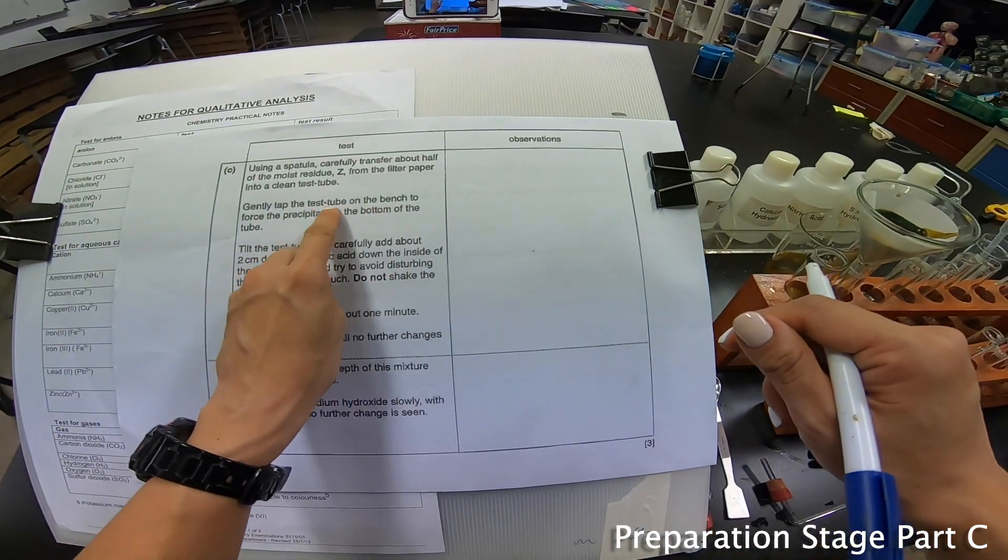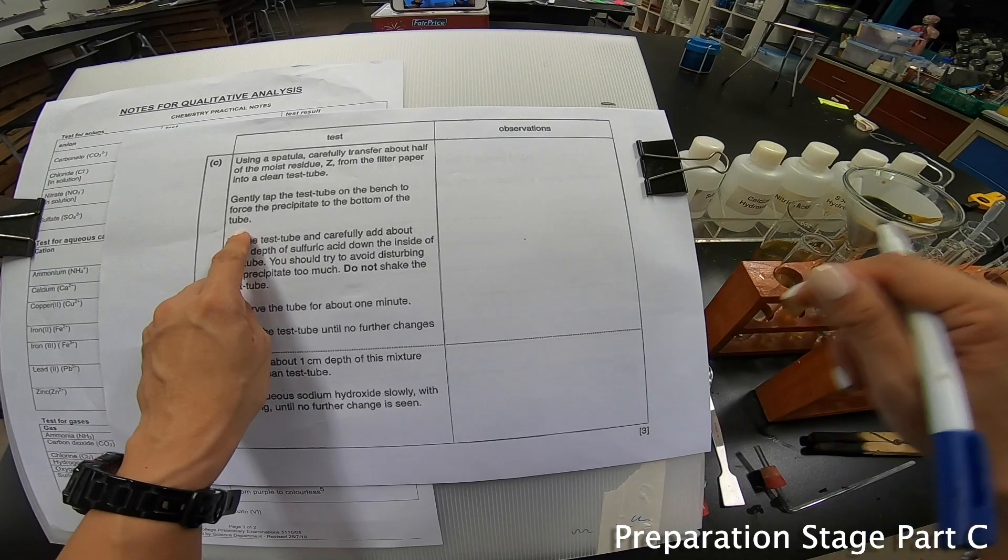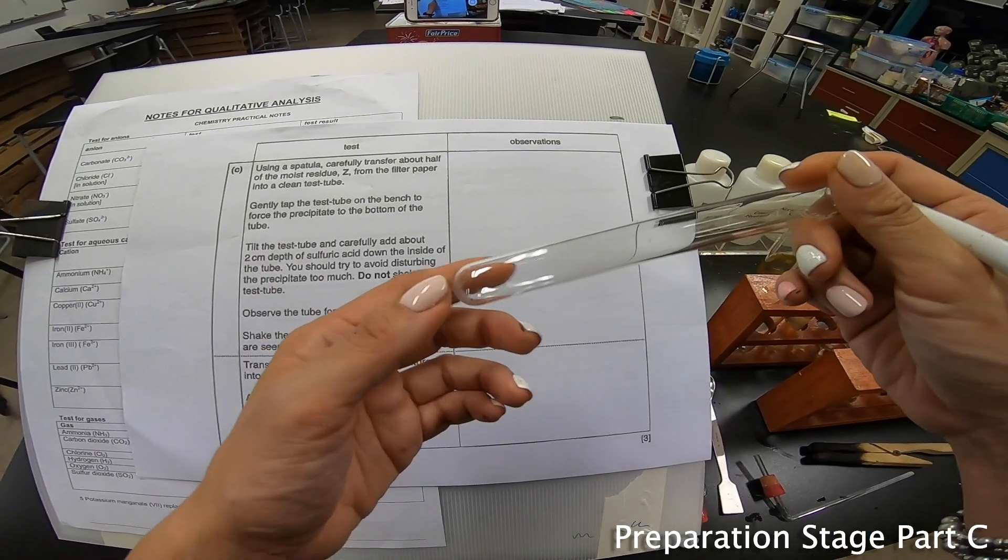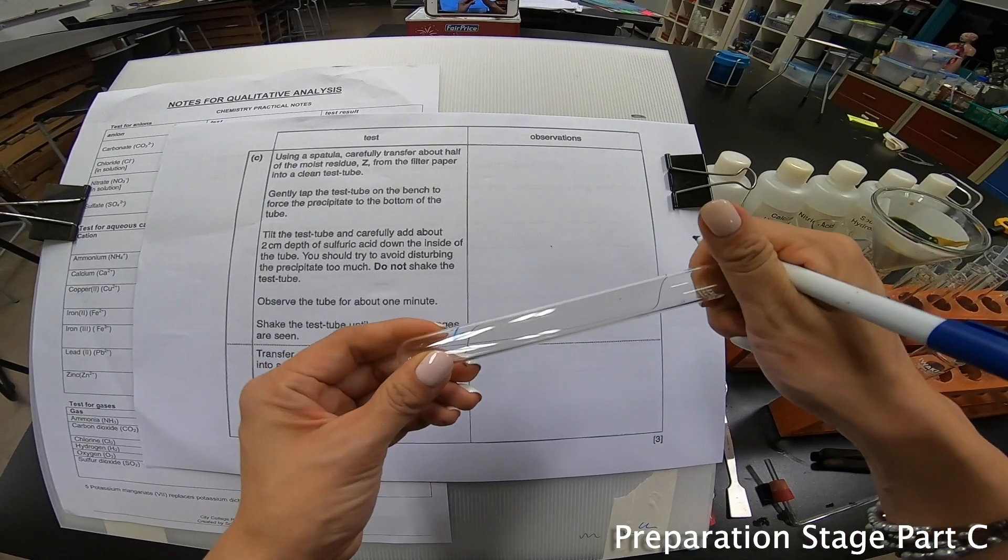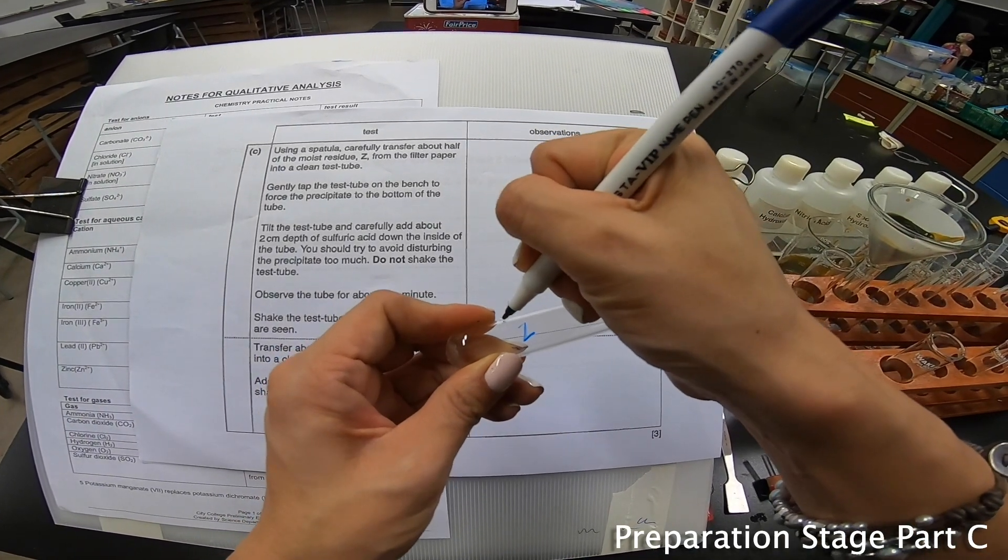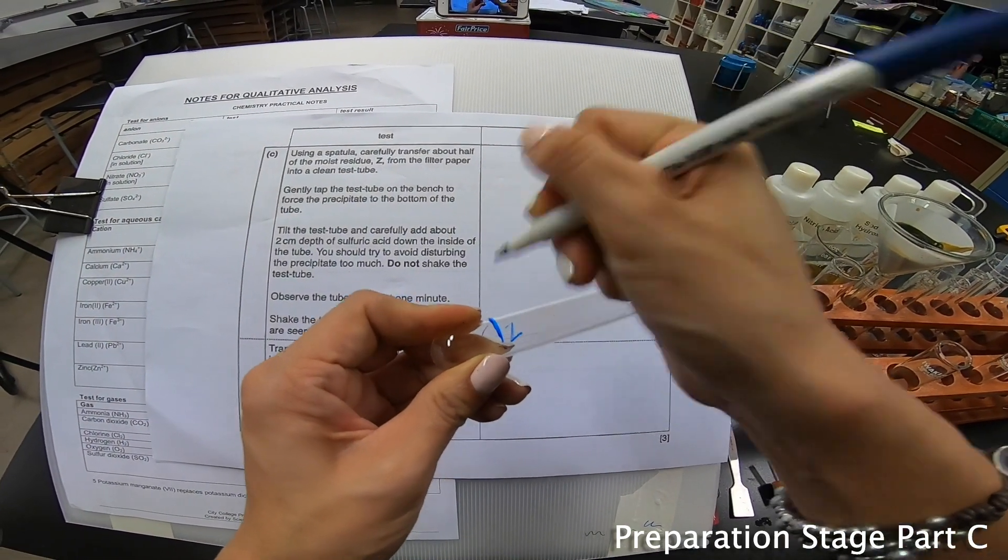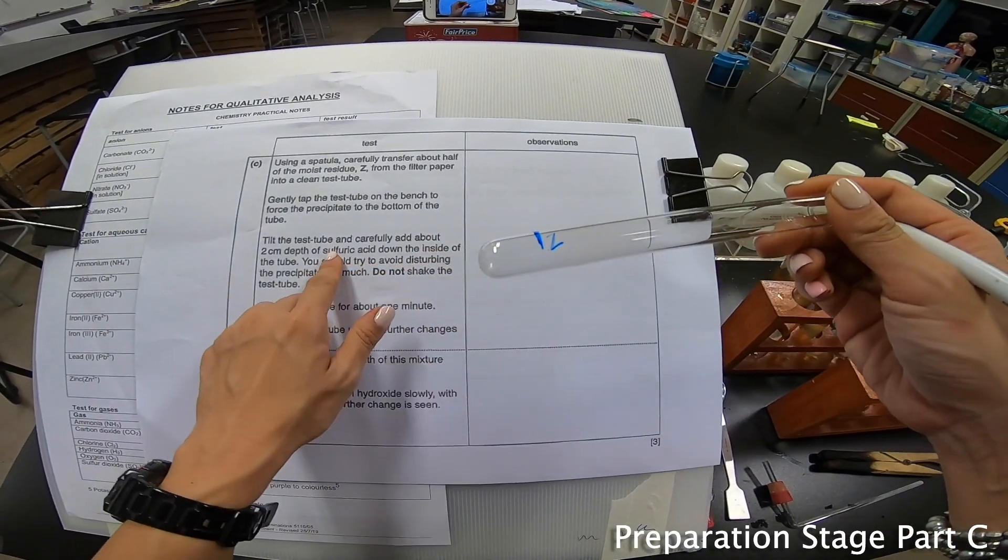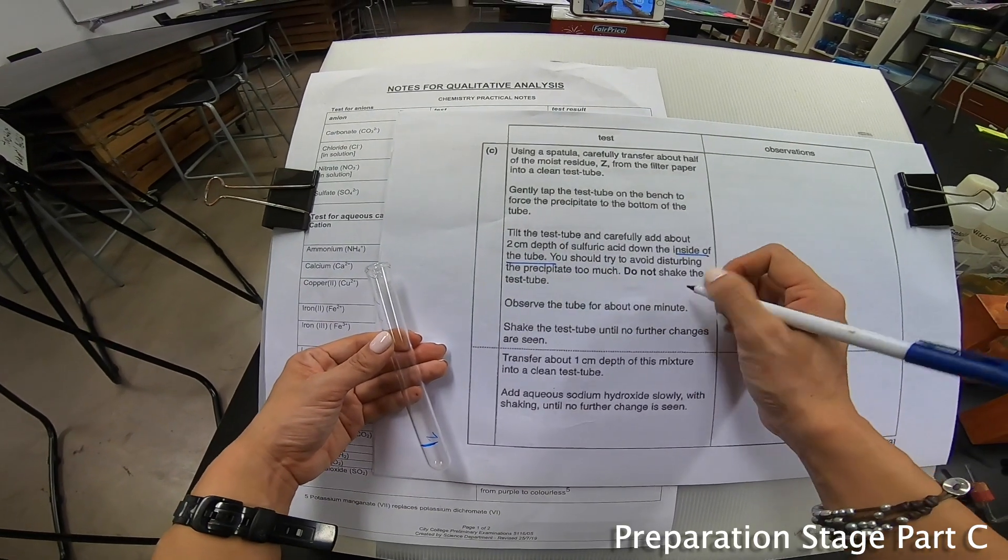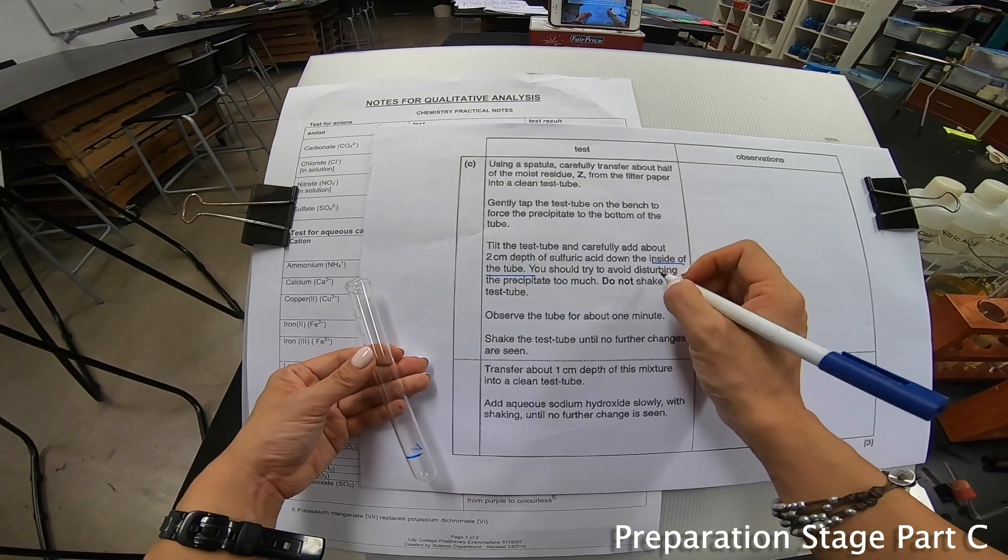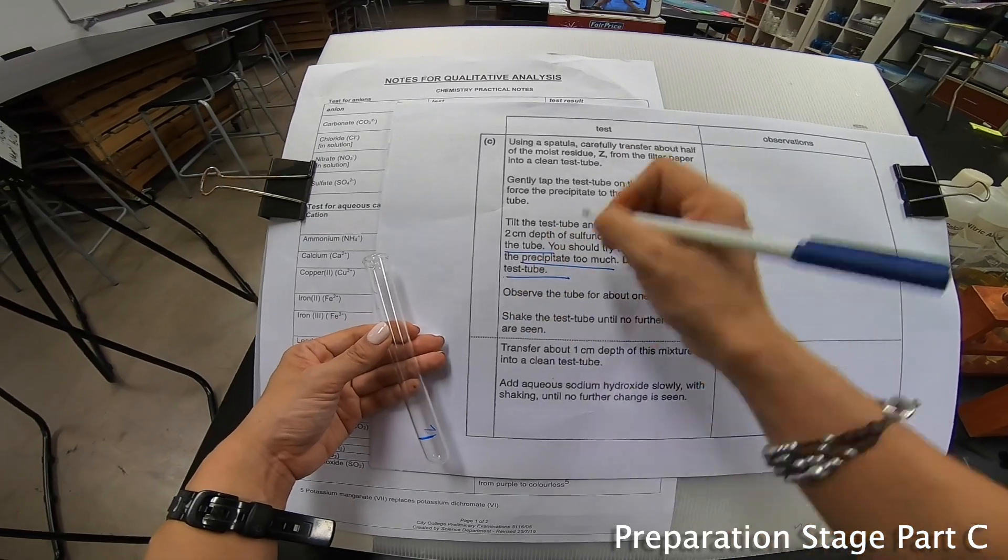Gently tap the test tube on the bench to force the precipitate to the bottom of the test tube. I'm going to write down Z, and then to this add about 2 cm depth of H2SO4, which is sulfuric acid, down the side of the test tube. You should try to avoid disturbing the precipitate too much. Do not shake the test tube.